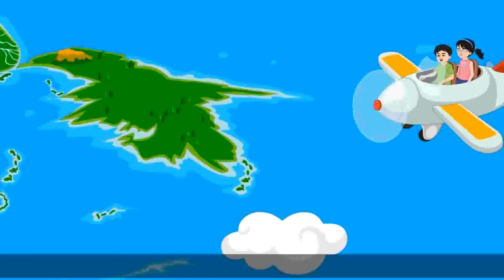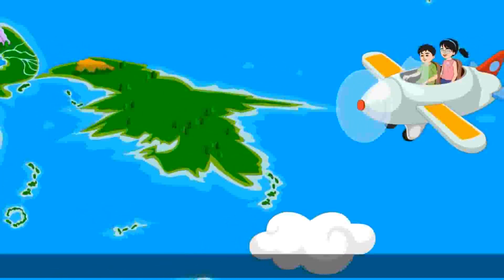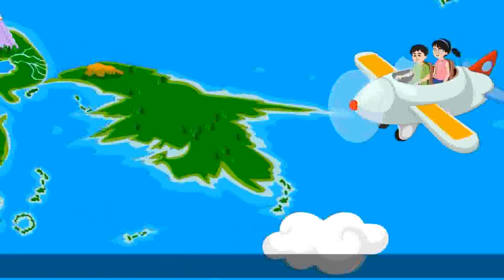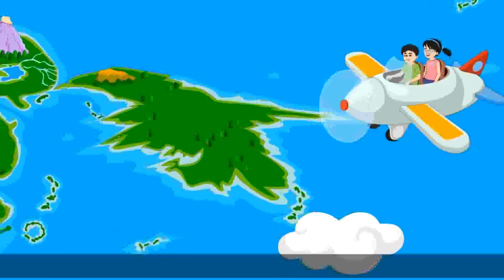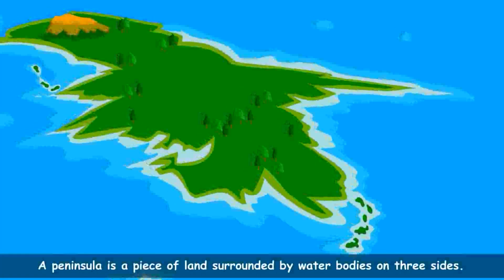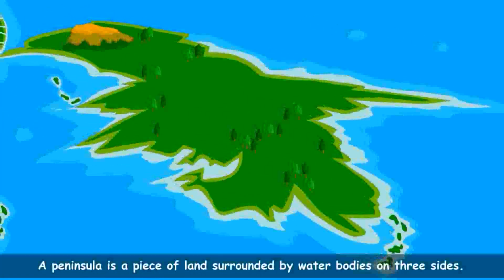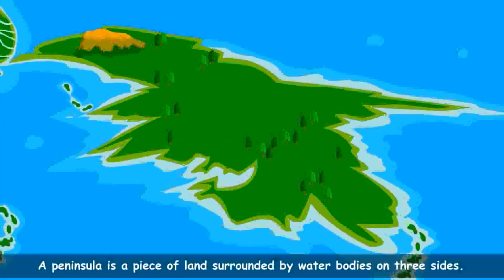Wow, what a beautiful area, Maria! Yes, Rohit, it is called a peninsula. It is a piece of land surrounded by water bodies on three sides.